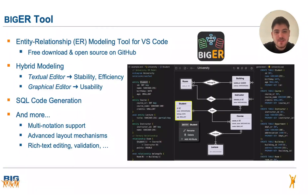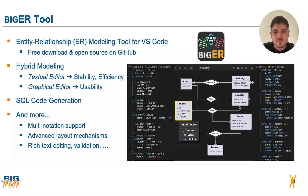With the motivation discussed, I will now introduce our main contribution, the BigER tool. It is an entity relationship modeling tool available as an extension for VS Code. The extension can be freely downloaded from the official marketplace and all the code is open source on GitHub. The key feature is its support for hybrid modeling, also called blended modeling, defined as being able to seamlessly interact with a single model from multiple representations or notations.